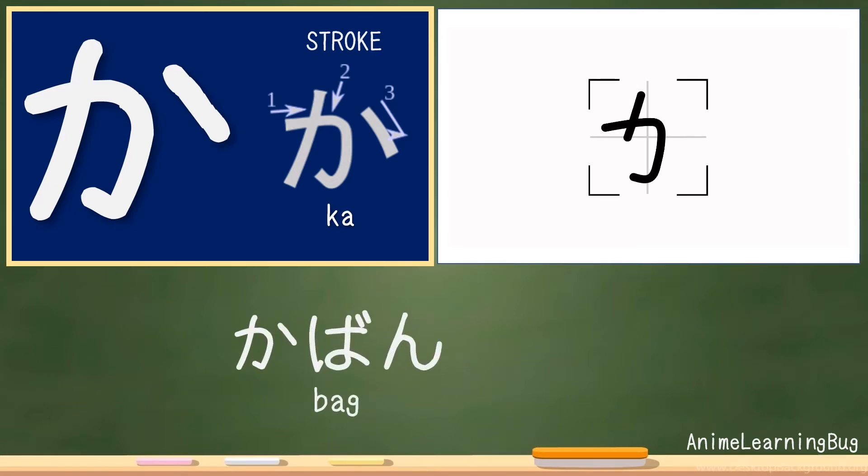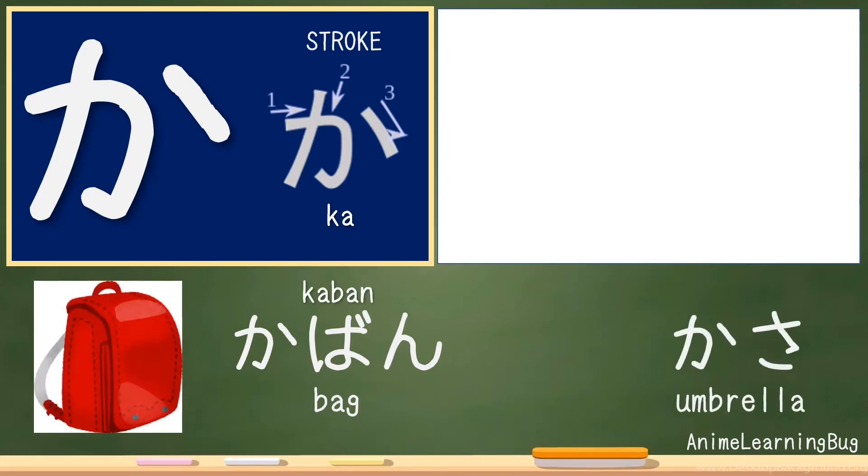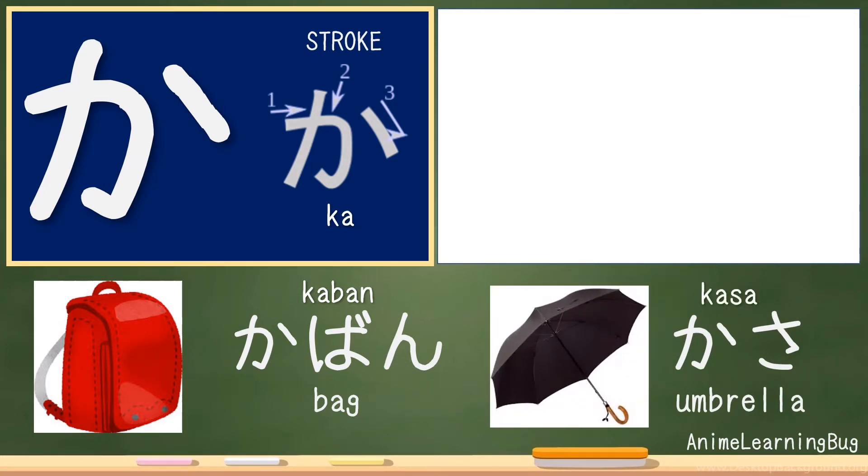So for example, we have here kabang, or bag, and kasa, which means umbrella.